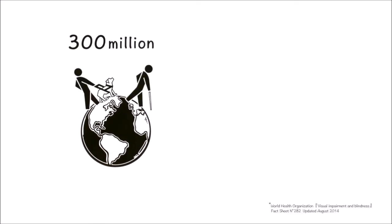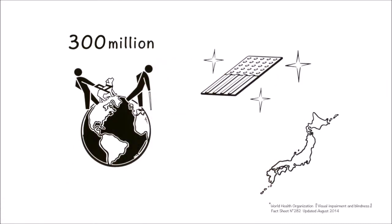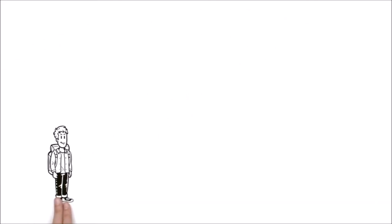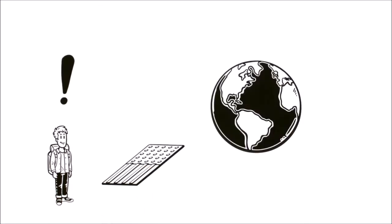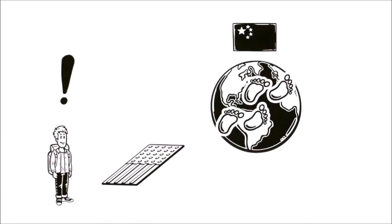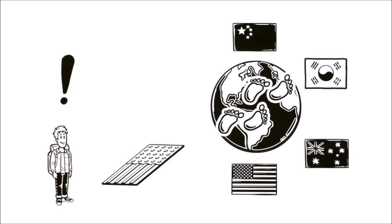Worldwide, there are around 300 million visually impaired people. No wonder other countries quickly adopted this highly effective Japanese invention. Ken remembers seeing these tiles as he travelled through countries as varied as China, South Korea, Australia and the USA.